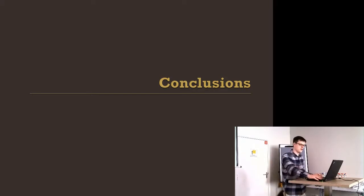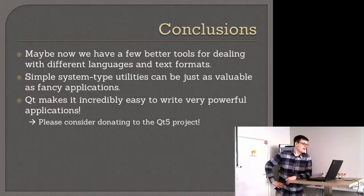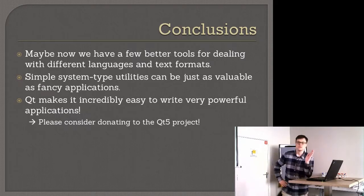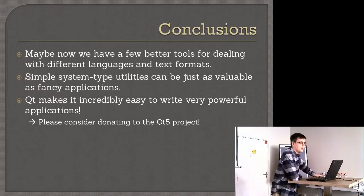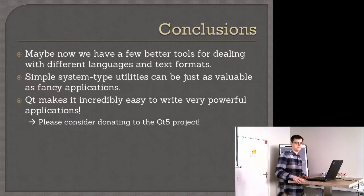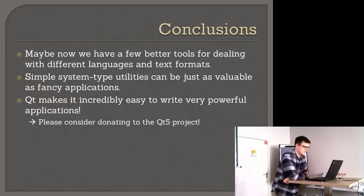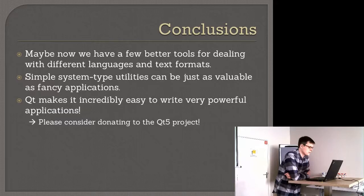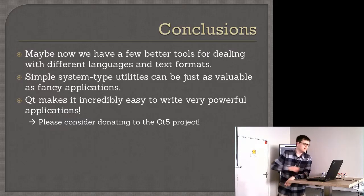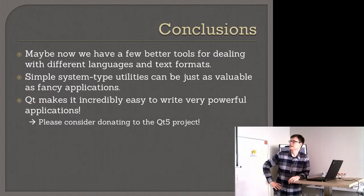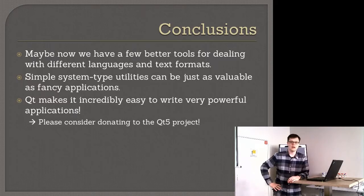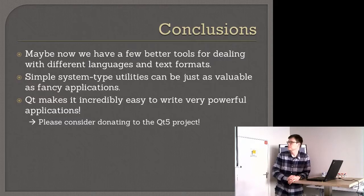All right, now, I think I'll go to my conclusions before I do the demo, so can you go to the next slide, please? This presentation has kind of wandered all over the map, but I'll briefly summarize what conclusions I can draw from my work. So maybe now, next please, maybe now we have a few better tools for dealing with different languages and text formats. Simple, system-type utilities can be just as valuable as fancy applications, and this is something that I found throughout my programming career. You know, I started programming for OS2 just doing little simple things, not trying to write fancy, flashy, kind of marquee advertising copy type of applications, and I think, in many ways, these are the most useful type. And finally, as I definitely found when writing ATCalculator and QE, QT makes it incredibly easy to write very powerful applications, and I can't really stress enough just how useful it is to have this toolkit available to us. So, if you haven't yet, please consider donating to the QT5 project, because that really is so much of a guarantee of our future on this platform.